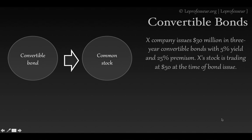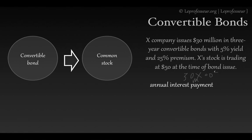Let's look at an example. Hypothetical company X issues $30 million in three-year convertible bonds with a 5% yield and a 25% premium, and the stock is trading at $50 at the time of issuance. The annual interest payment is simply $30 million multiplied by 5%, giving us $1.5 million per year.